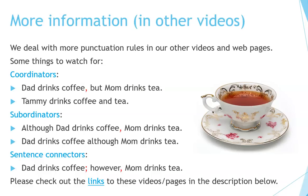More information in other videos. We deal with more punctuation rules in our other videos and web pages. Some things to watch for: co-ordinators — for example, 'Dad drinks coffee, but Mom drinks tea.' 'Tammy drinks tea and coffee.' Subordinators: 'Although Dad drinks coffee, Mom drinks tea.' 'Dad drinks coffee, although Mom drinks tea.'